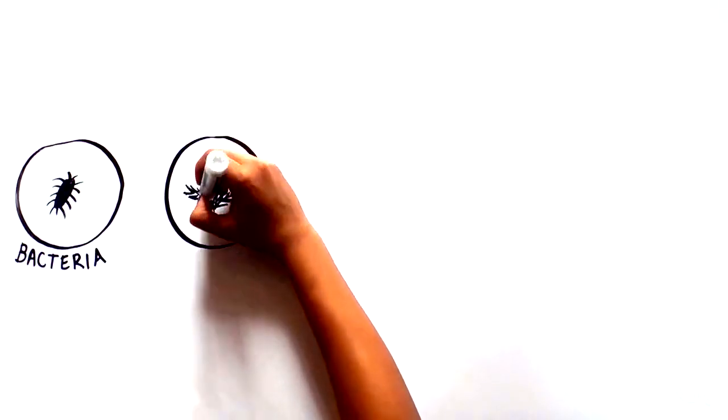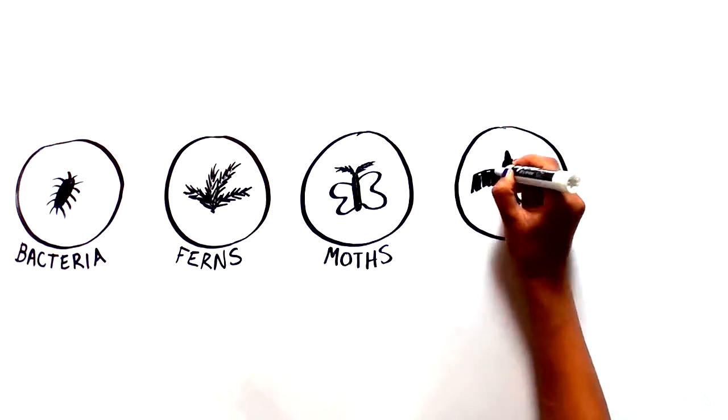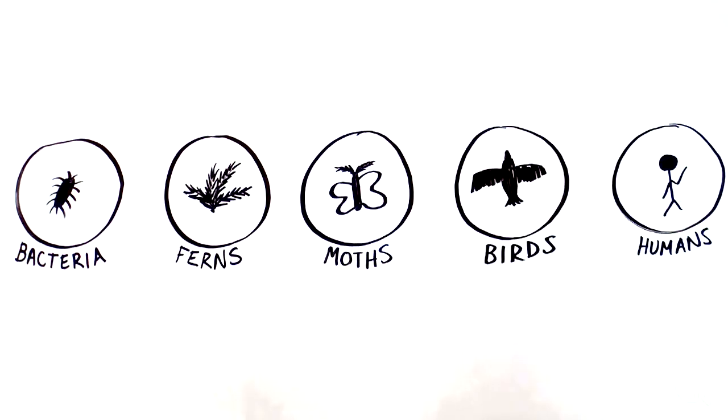Think about the amazing diversity of living things on Earth, ranging from single-celled organisms like bacteria to complex, multicellular organisms like ferns, moths, birds, and humans.